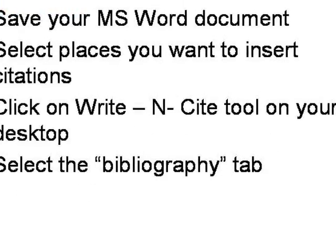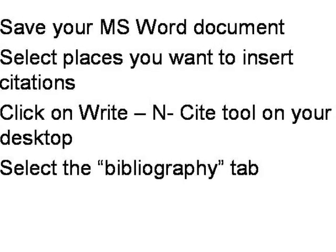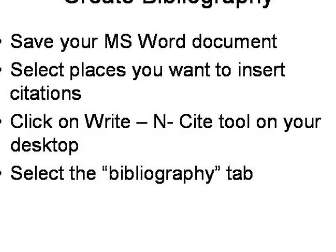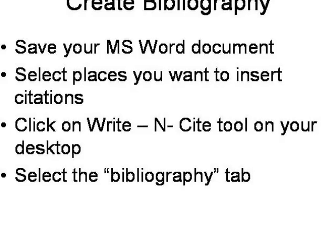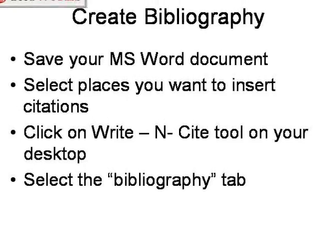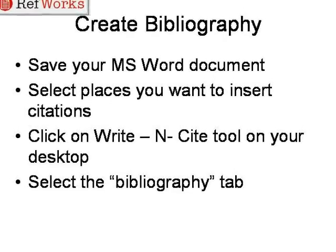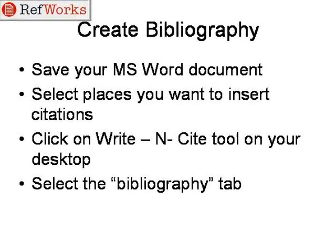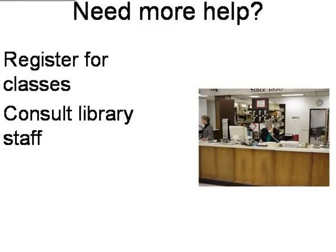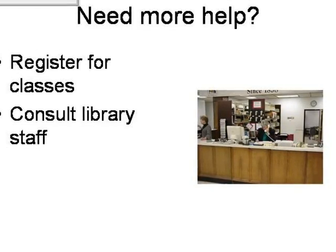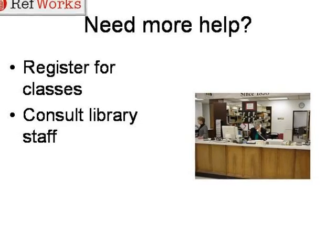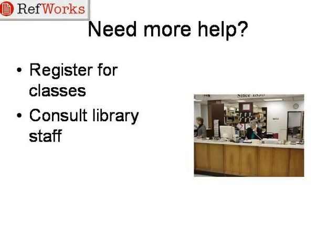Now comes the fun part — creating the bibliography. Assuming you have your MS Word document saved and Write-N-Cite is on your desktop, go into your Word document, select the places where you want to insert your citations, and place your cursor there. Then click on Write-N-Cite, which will take you back to RefWorks where you'll need to log on again, and then select the bibliography tab. You can select any output style available in RefWorks. If you need an output style that's not available, just let us know and we'll contact RefWorks to get it added. If you need more help, please register for our classes or consult the library staff and we'll be glad to help you.